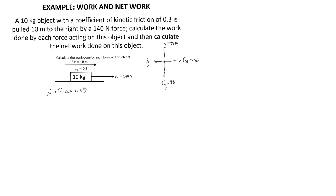Since we know the normal force, we can calculate the friction force using the formula: friction equals the coefficient of friction multiplied by the normal force, where the coefficient is given as 0.3 and the normal force has been calculated as 98 newtons. The friction force acting on this object is therefore 29.4 newtons.